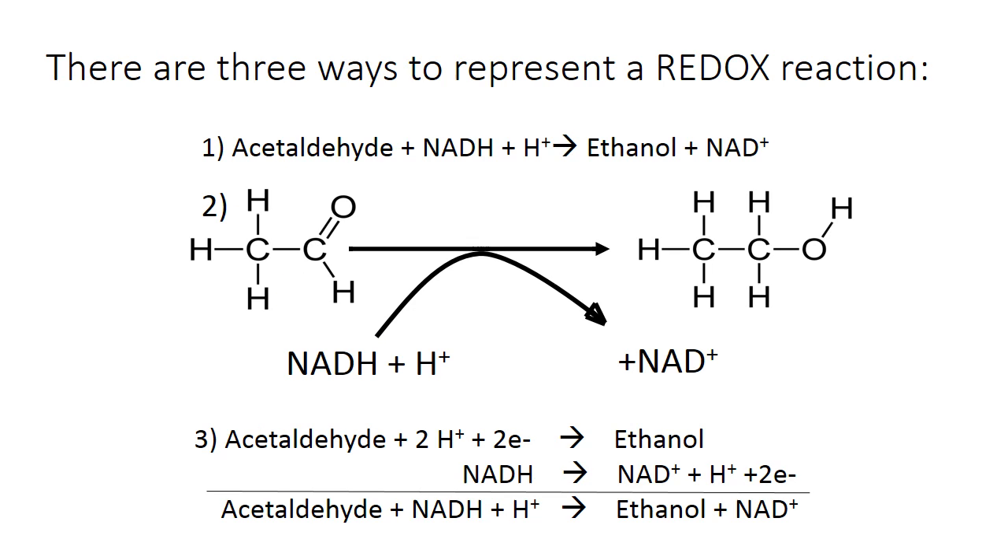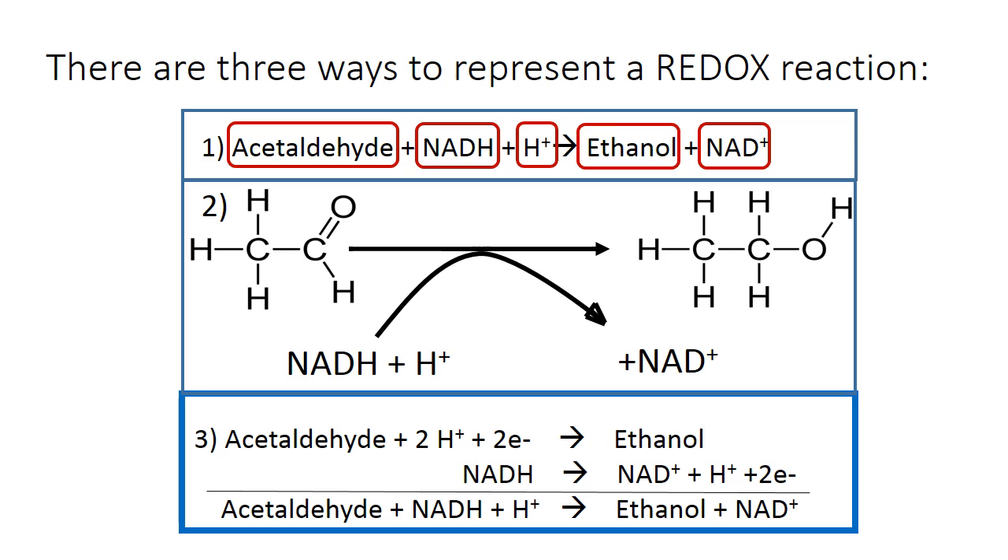There are three ways of representing redox reactions, which are shown here. This is the same reaction written in all three ways. The reactants are acetaldehyde, NADH, and a proton. The products are ethanol and NAD+.